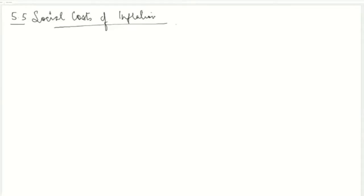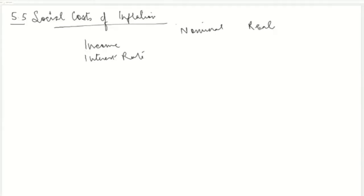There is a huge difference between the real aspect of any variable versus the nominal aspect. When we talk about any variable — be it your income or your interest rate — it has two sides: the nominal side, which is its face value, and the real side, which is its actual purchasing power — how much you can buy from it, which depends on the current price level.